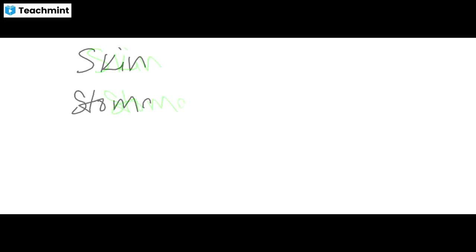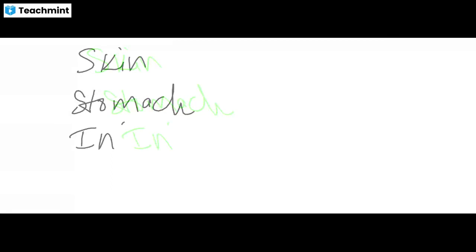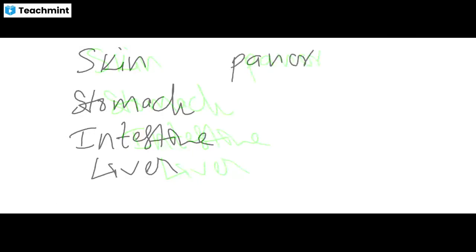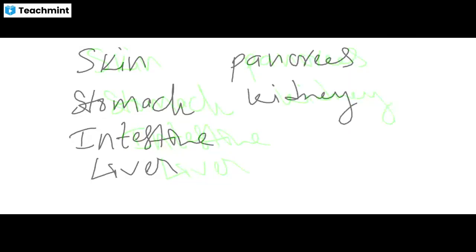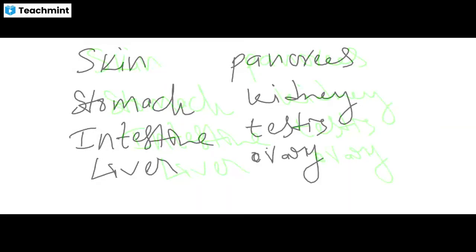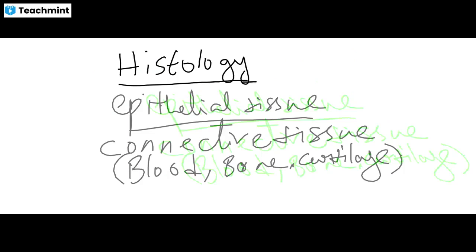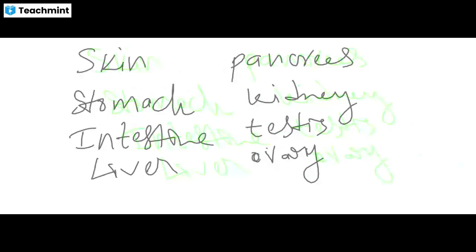In the next class, we have organs. The first one is about skin, and the second organ is stomach, then intestine, liver, pancreas, kidney, testes, and ovaries. So here, Unit 9 of histology consists of these different topics.